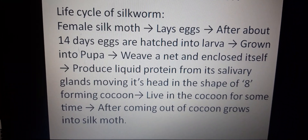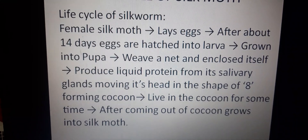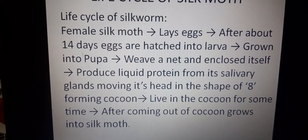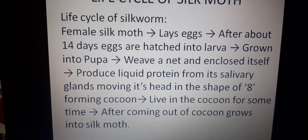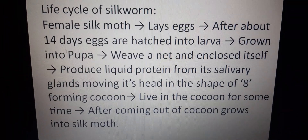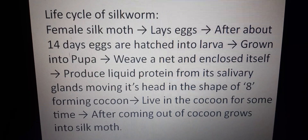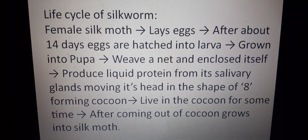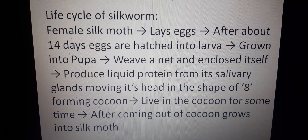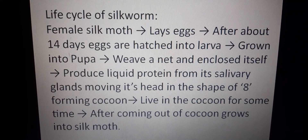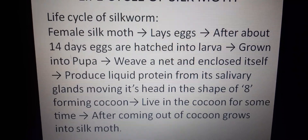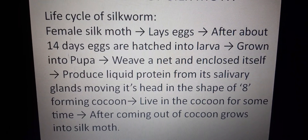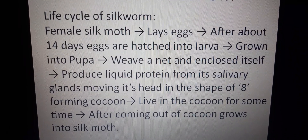After hatching, the tiny caterpillars grow in size. They need to eat to grow, and therefore they are fed with mulberry leaves. Once the caterpillars are about a month old, they stop eating and turn yellow in color. Then they weave a net and enclose themselves, knotting their head in the shape of eight. From their salivary glands, a liquid comes out which solidifies on exposure to air and forms a cocoon.